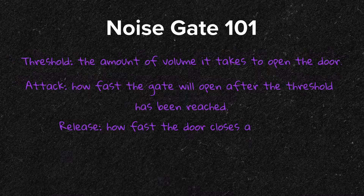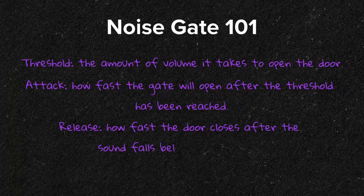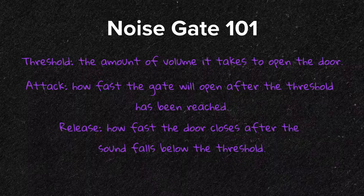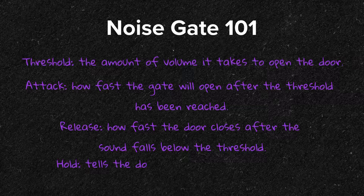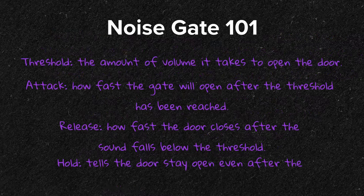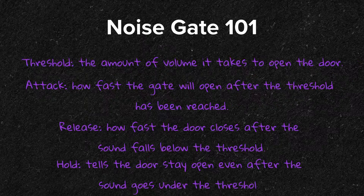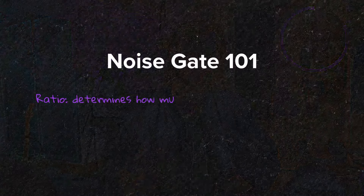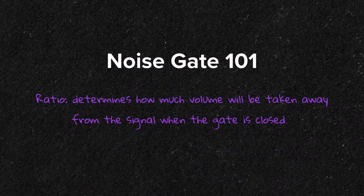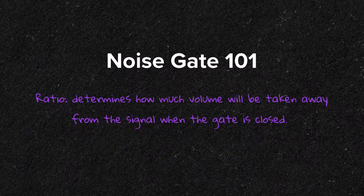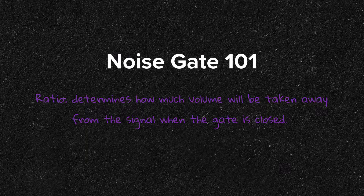The release is how fast the door closes after the sound falls below the threshold. Hold will tell the door to stay open even after the sound goes under the threshold — this helps the gate to not abruptly cut the sound off. And ratio determines how much volume will be taken away from the signal when the gate is closed.